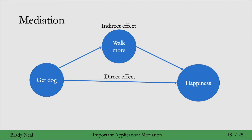We have some potential mediator that we want to know: what amount of the total causal effect is going through the mediator, and what amount is not going through the mediator. For example, if all of the causal effect of getting a dog on my happiness is mediated by just walking more, then I don't really need to get a dog — I could just walk more.